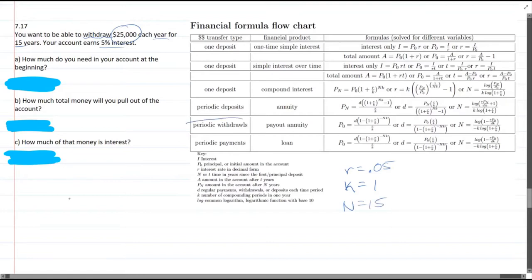Alright, periodic withdrawals right here. So we're automatically down here on the second to last row. And we want to know how much you need in your account at the beginning. So we want to know what is P0. So we want to find P0. So right away, we're going to use the first formula right here. It's already solved for P0.